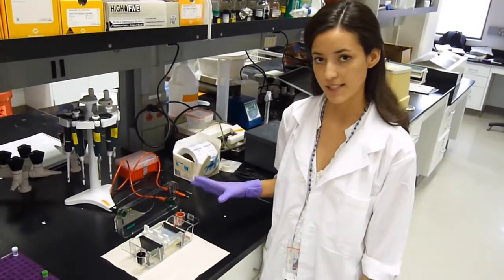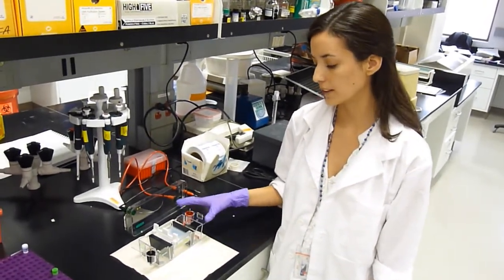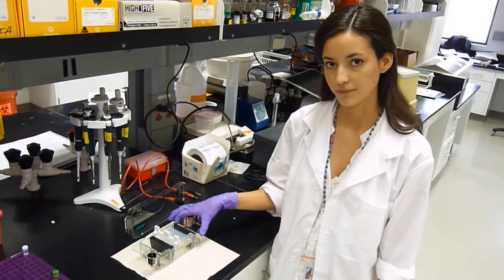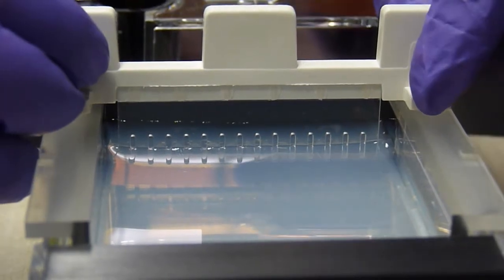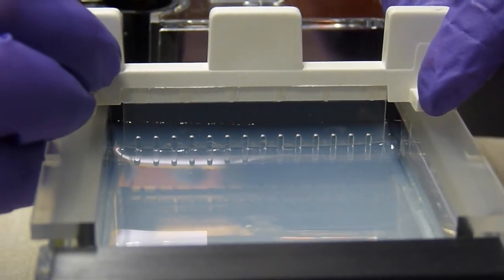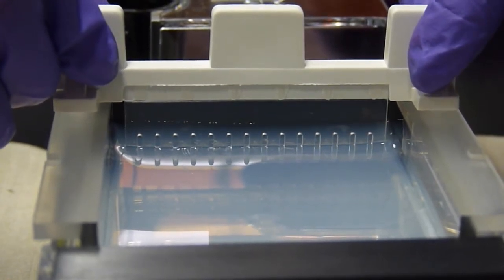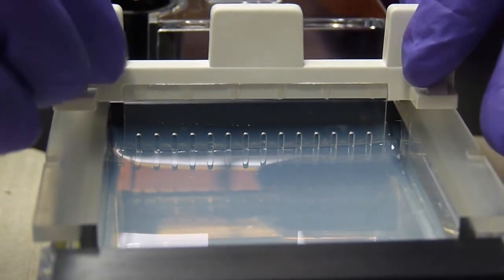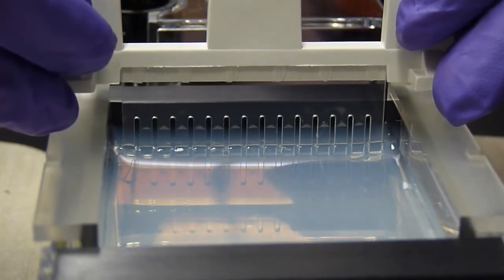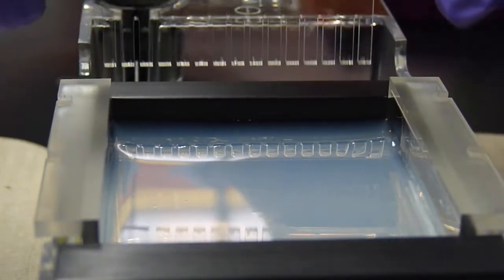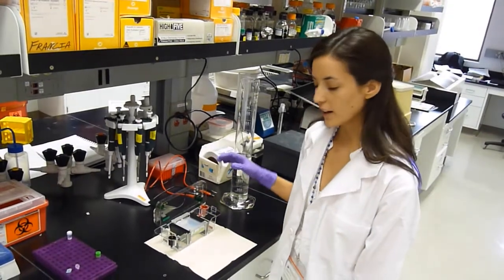It's been about 20 minutes and our gel is set. The way you can tell is that the gel turns from a clear liquid to an opaque colorless solid. And now we're going to take out the combs. Be very careful when removing your combs. You don't want to tear your sample wells. Just lift vertically. You will feel some resistance, but keep pulling.